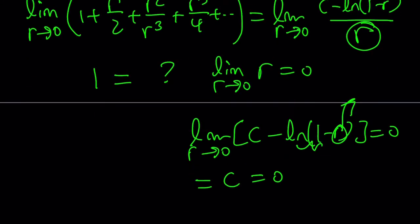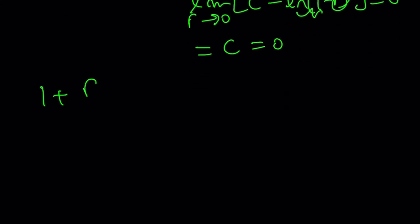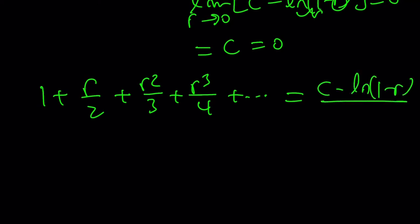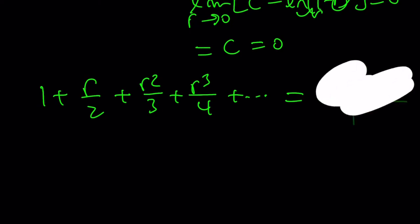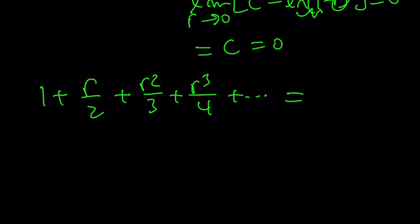So now our sum is going to turn into the following: 1 plus r over 2 plus r squared over 3 plus r cubed over 4. Since c is equal to 0, this sum is just going to equal c minus ln 1 minus r over r. But c is 0, so we can just write this as negative ln 1 minus r over r.